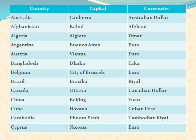Austria: its capital is Vienna and currency is Euro. Bangladesh: its capital is Dhaka and currency is Taka. Belgium: its capital is Brussels and currency is Euro. Brazil: its capital is Brasilia and currency is Real.